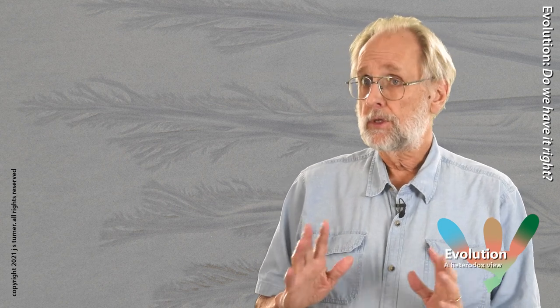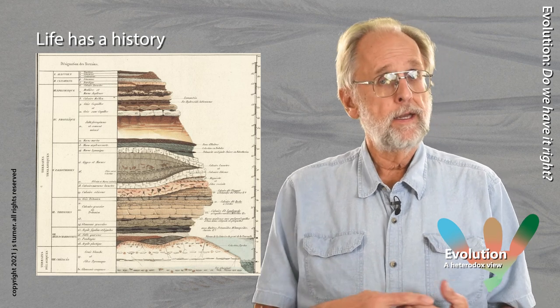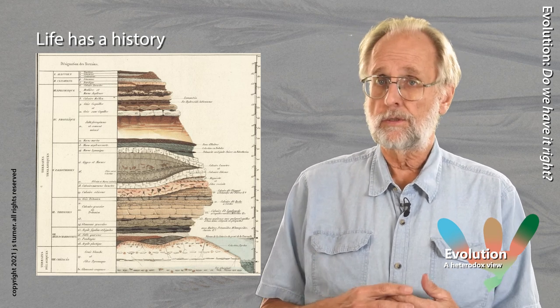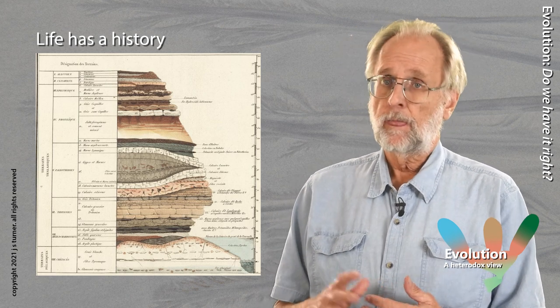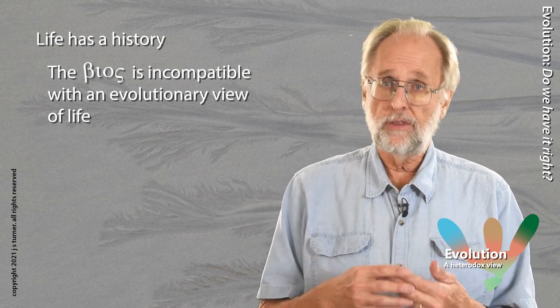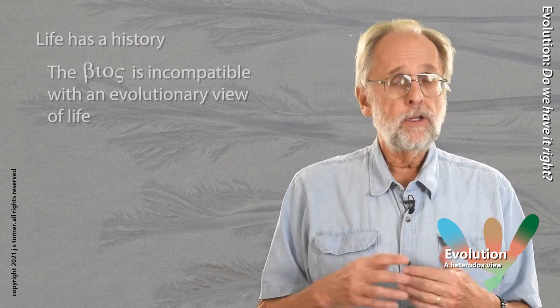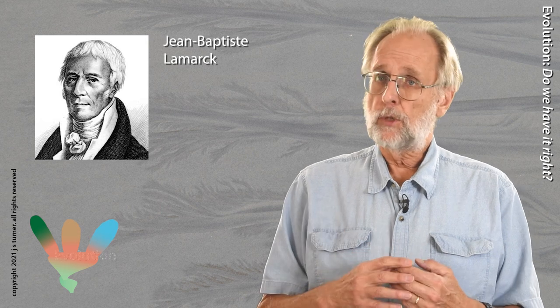This balancing act carried over into the earliest emergence of evolutionary thought. By the beginning of the 19th century, the evidence was clear that life had a history. Georges Cuvier had demonstrated this with his fossils. Species had beginnings, and they had ends. And this meant that the eternal Aristotelian bios needed to be rethought. It fell to another Frenchman, Jean-Baptiste Lamarck, to make the first try at that.